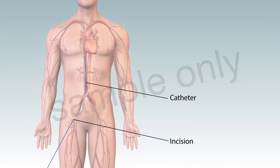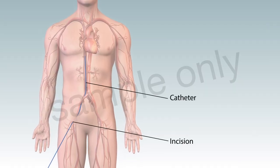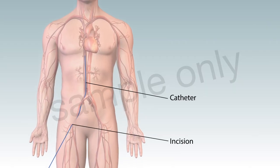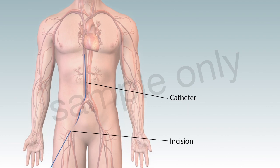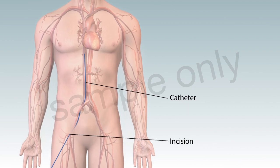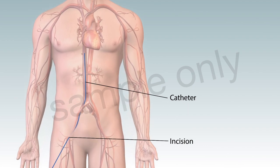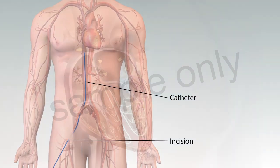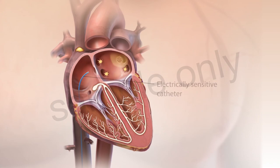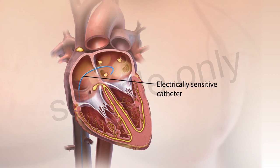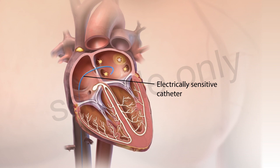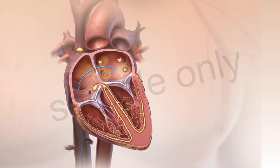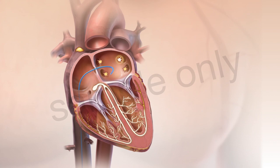To begin an electrical mapping procedure, a thin tube called a catheter is inserted into a small incision in the arm or upper thigh. A smaller electrically sensitive catheter is then inserted inside the first catheter and into the heart.